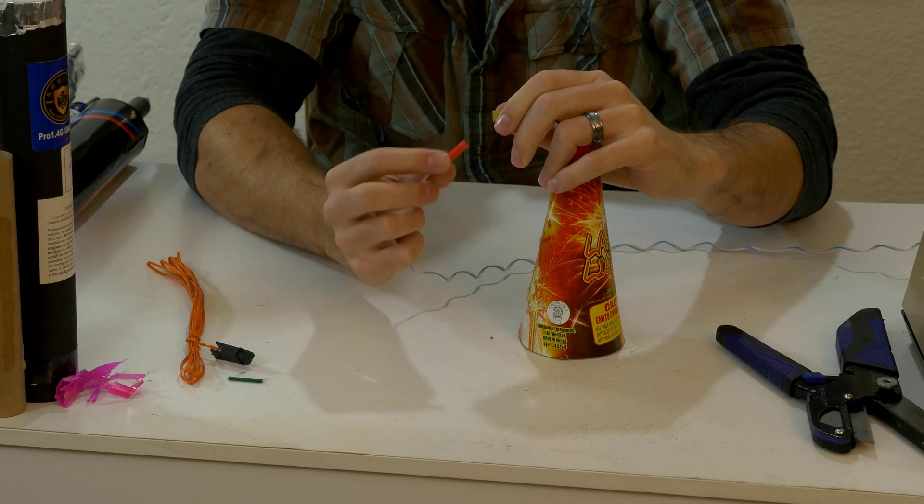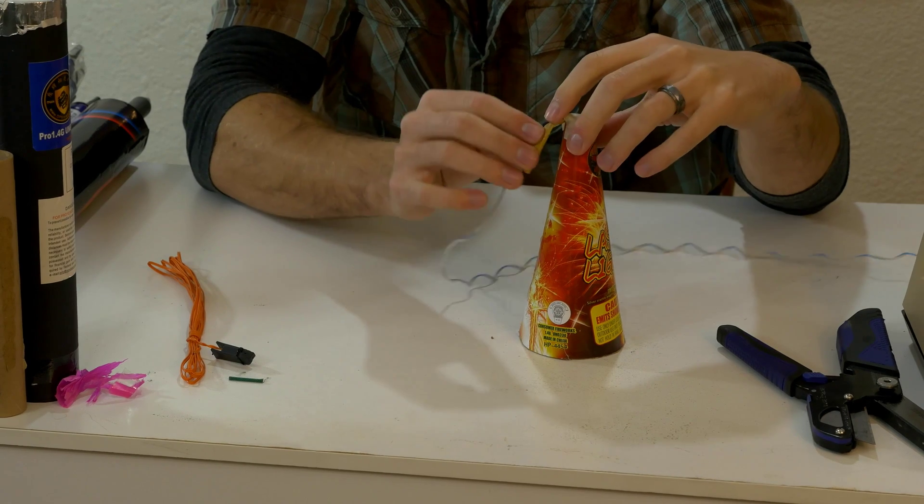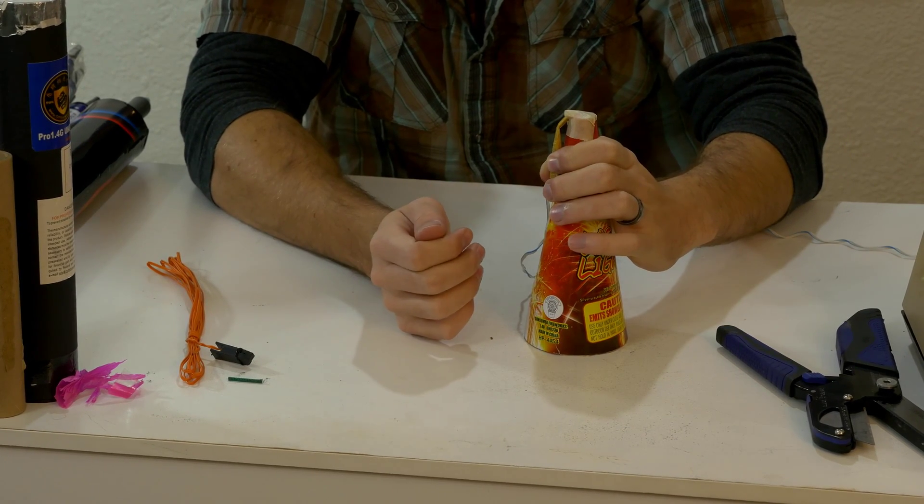And then from here, I can insert my e-match or i-match into that. I'd tape that down as well just to make sure that doesn't move any. And then you'd be good to go.